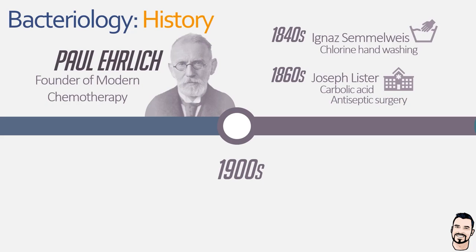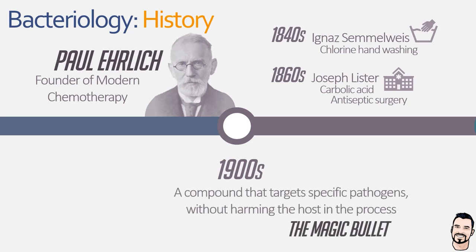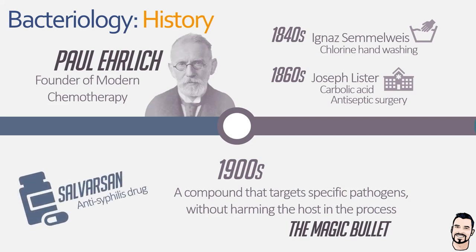Ehrlich built upon these earlier advances, hypothesising about a magic bullet — the idea that a compound could specifically target disease-causing microorganisms without harming the human body. From this hypothesis, he developed Salvarsan to treat syphilis, a rampant sexually transmitted bacterial infection at the time. Salvarsan was an arsenic derivative, highly modified to be less toxic to humans, but retaining its effectiveness against the syphilis bacterium, allowing its use with fewer side effects. This development was crucial for the evolution of chemotherapy and the treatment of infectious diseases.